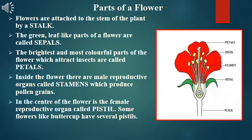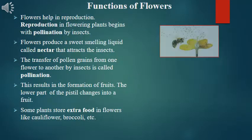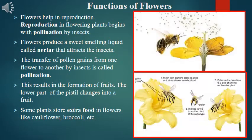Inside the flower there are male reproductive organs called stamens, which produce pollen grains. In the center of the flower is a female reproductive organ called the pistil. Some flowers, like buttercup, have several pistils.